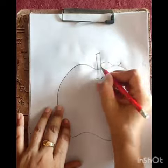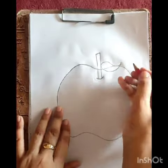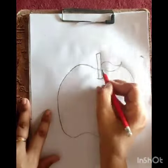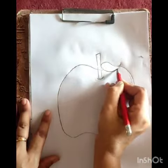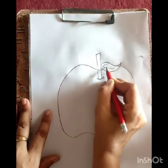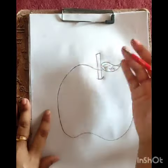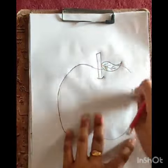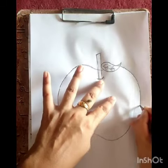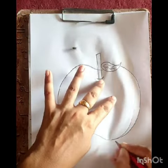To start, we will need to draw a simple outline of the apple. We will start with a circle for the top of the apple, and then we will add a slightly smaller circle for the bottom.